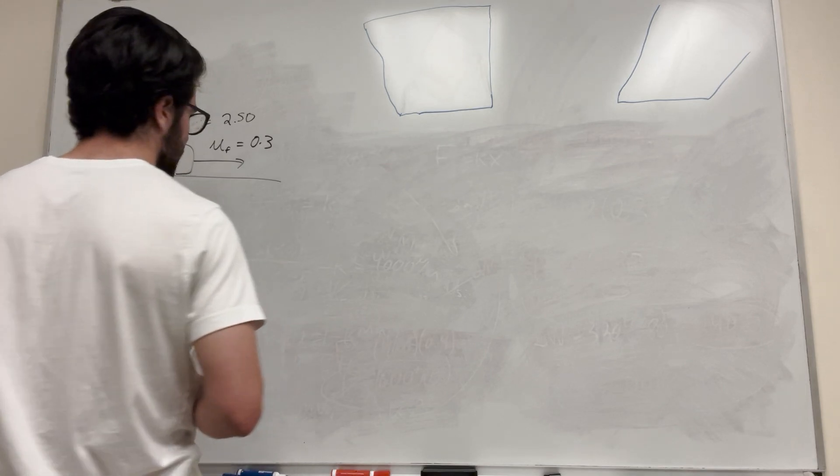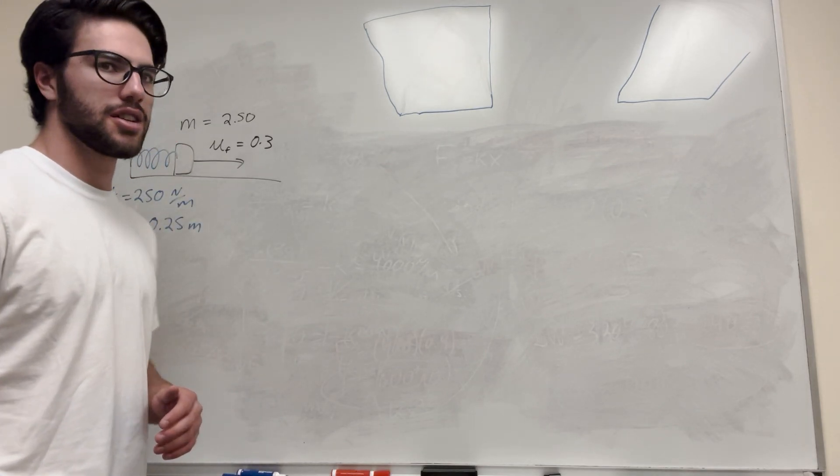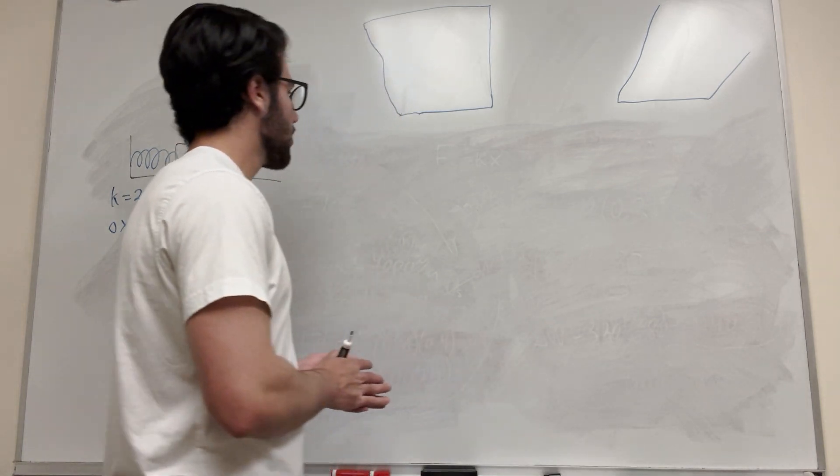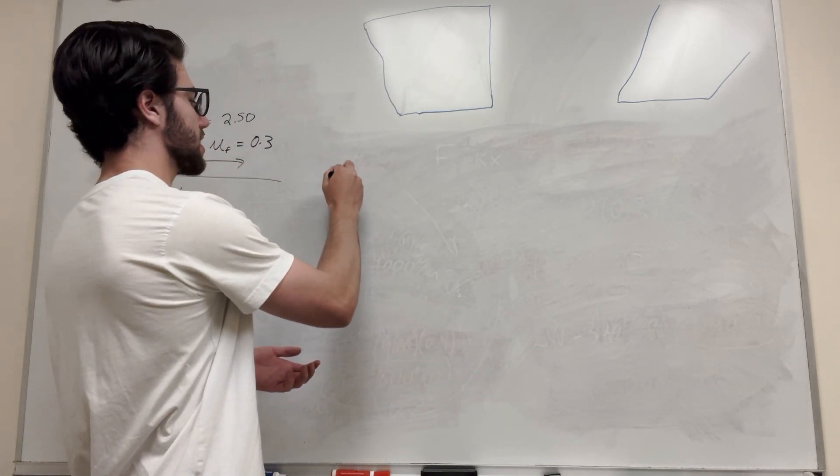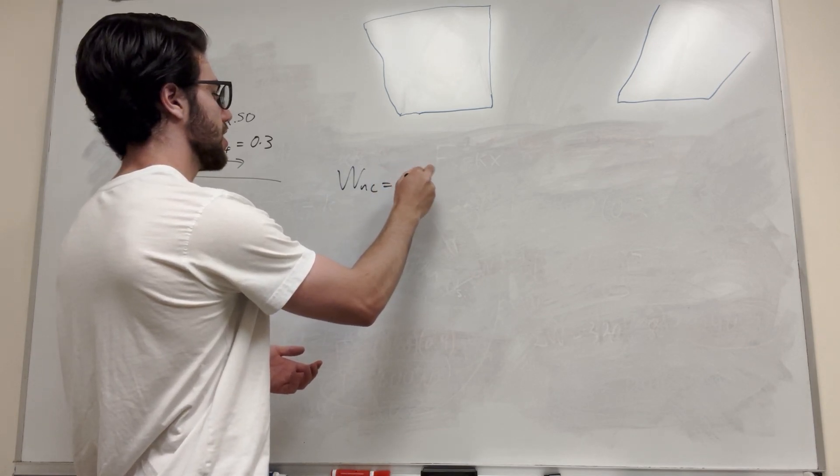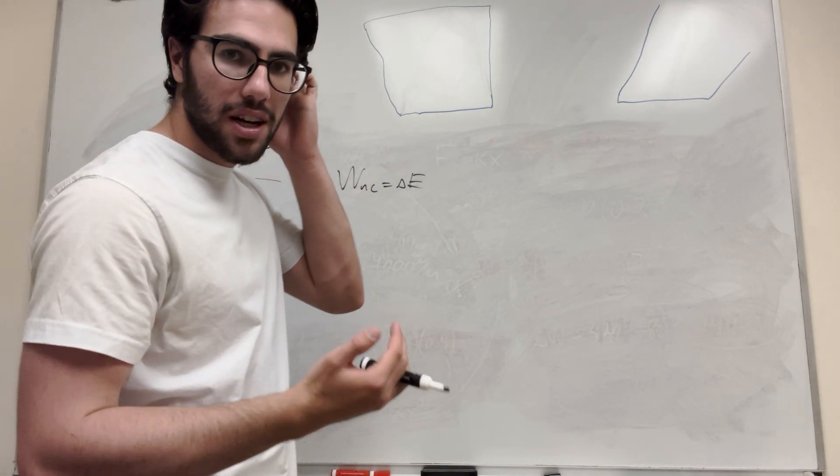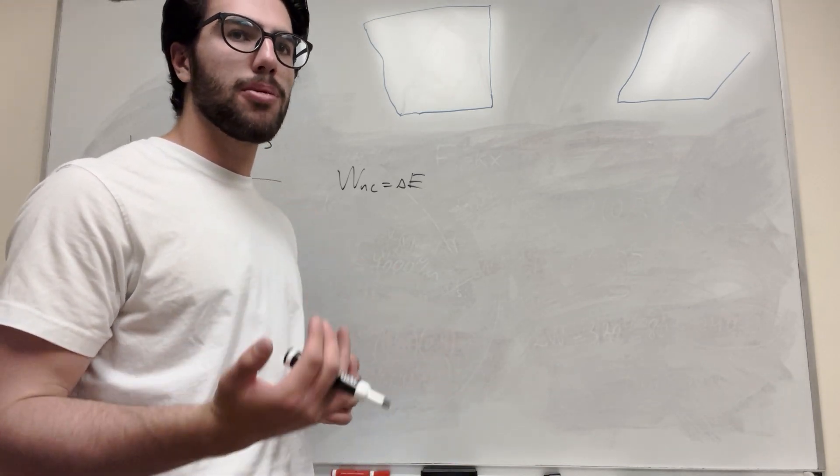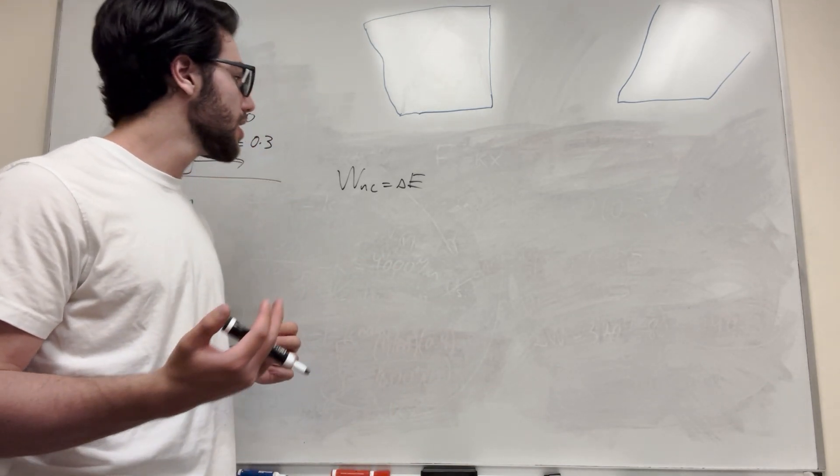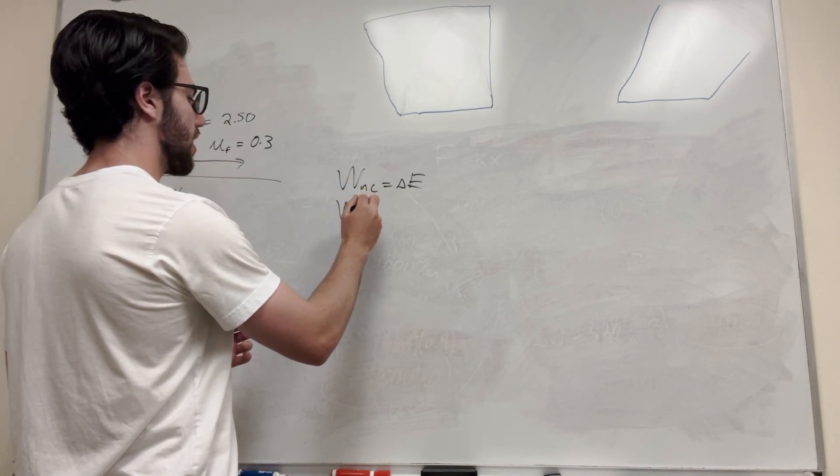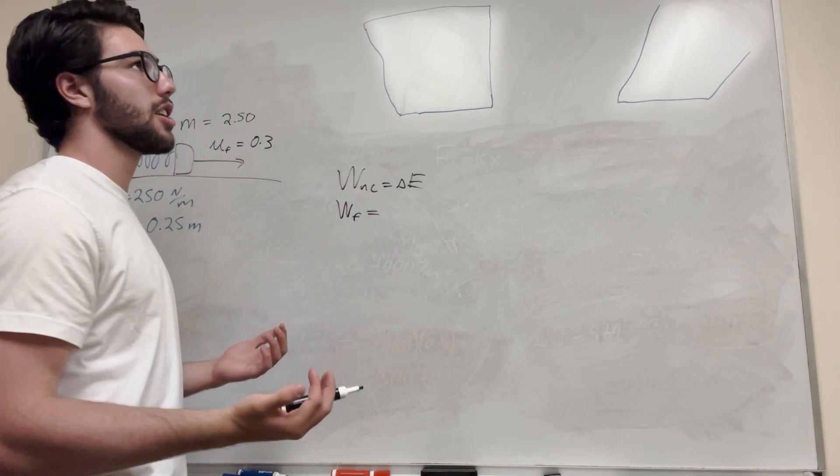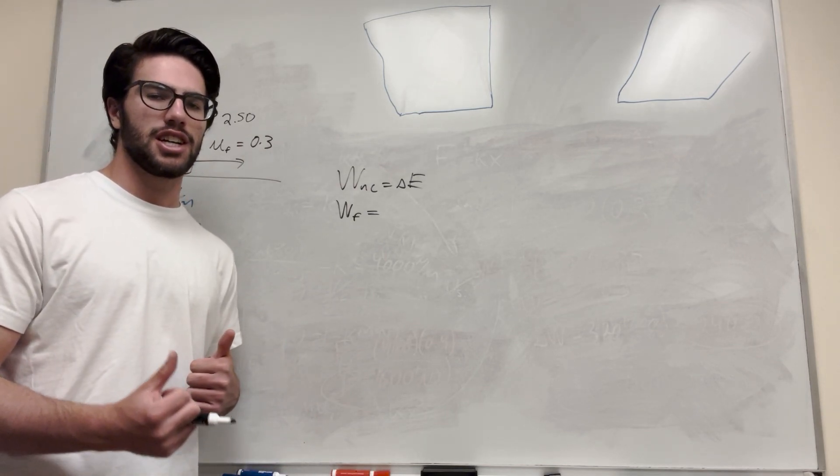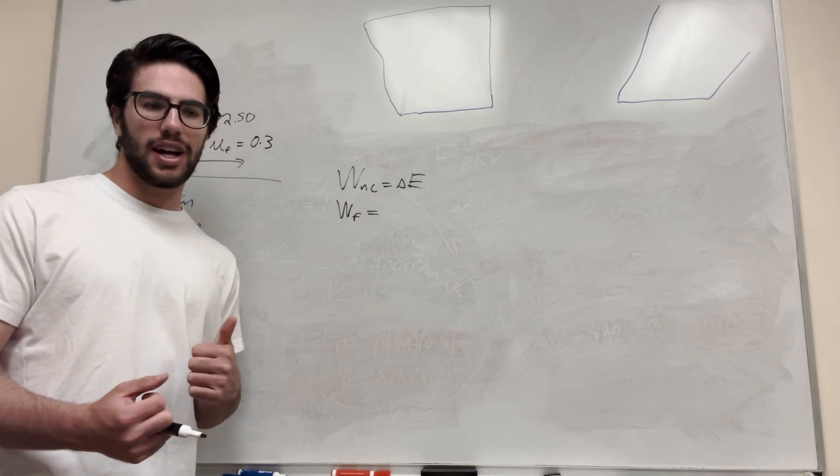So we're gonna use our work energy theorem for this one. If you don't know the work energy theorem, I'm gonna explain it a little bit, but I've done it a couple times on this channel, so hopefully you know it a bit by now. What it says is that work non-conservative is equal to the change in energy. So work non-conservative, that's basically your friction force, your air resistance, any of that sort. In this problem, all we're concerned with is friction. So that's gonna be work done by friction, work friction, and our change in energy. So this is gonna be kinetic energy, spring potential energy, gravitational potential energy, all that stuff.